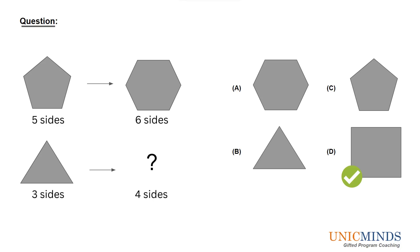And in the A, B, C, D options that we have, there is only option D which has a four-sided figure. Option A has six sides, option B has three sides, option C has five sides. And hence option D is the right choice.